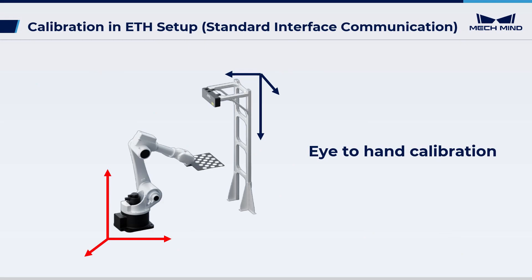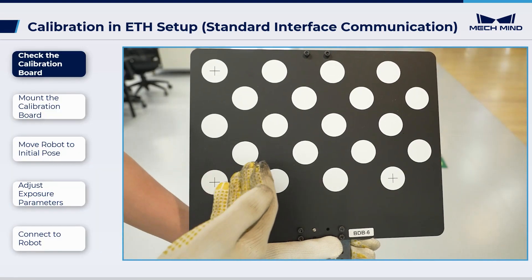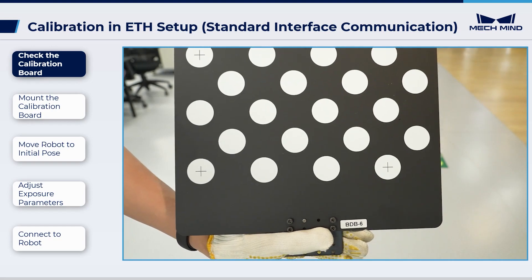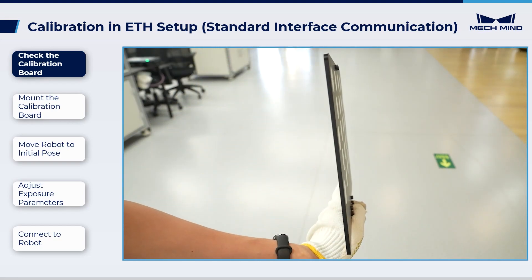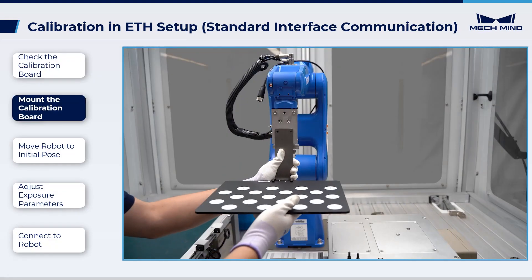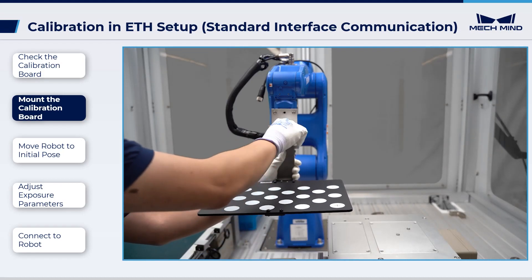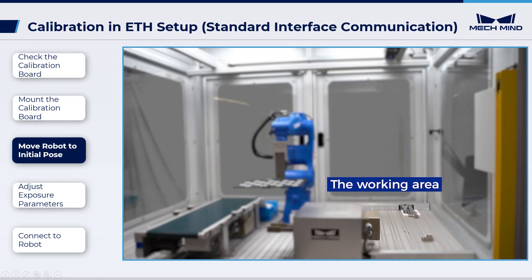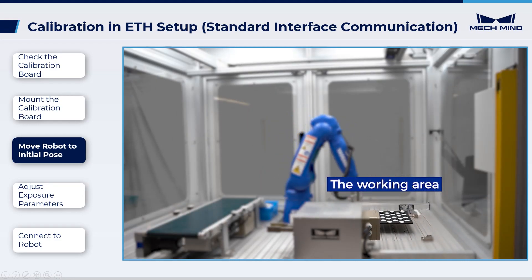Let's start the calibration. Make sure the circles on the calibration board can be clearly seen without scratches, and the calibration board does not have bends. Then mount the calibration board on the flange for fixing the board. After mounting, move the robot to the working area on the upper surface of the bottom layer objects.